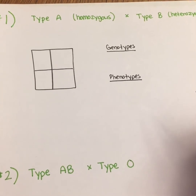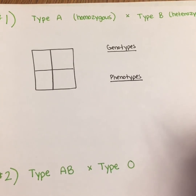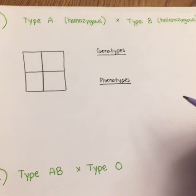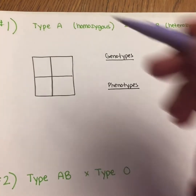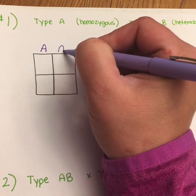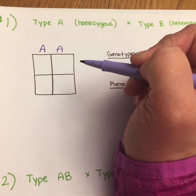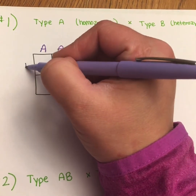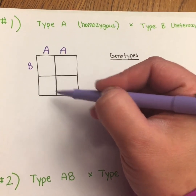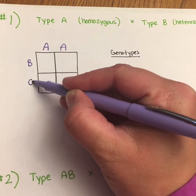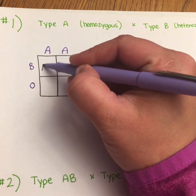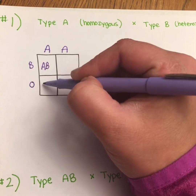Our first cross: we cross an individual with type A blood who is homozygous, with an individual with type B blood who is heterozygous. Type A homozygous would be A and A. Type B heterozygous would be B — and remember, heterozygous means two different, so in this case the other allele would be the recessive allele, which is O. We fill in our Punnett square like so, and we always put A first.